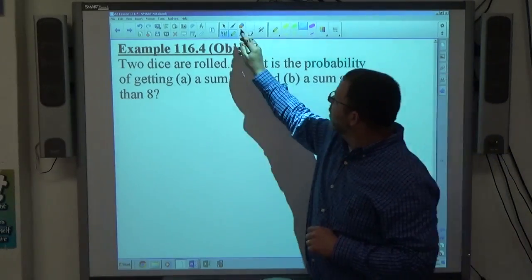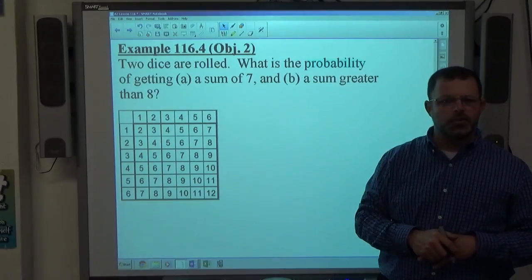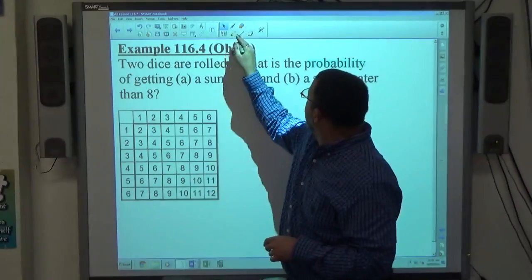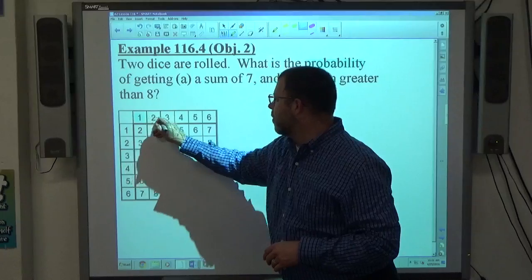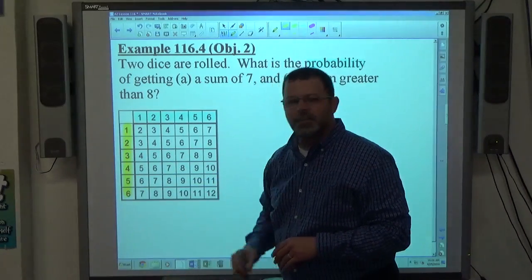And if it says two dice are rolled, this chart that we've made before is the chart we're going to use. What the top row represents is what we got on the first die. What the left-hand row represents is what we got on the second die.